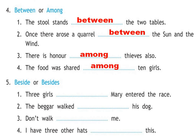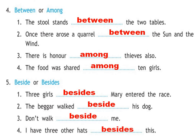Beside or besides: 'beside' means next to and 'besides' means in addition to. Three girls dashed Mary entered the race — three girls are already there, but Mary also entered in addition to all three, so we use 'besides'. The beggar walked dashed his dog — that means next to his dog, so 'beside'. Don't walk dash me — don't walk next to me, so 'beside'. And I have three other hats dashed this — I have this plus three more, so 'besides'.